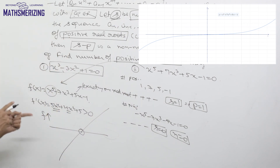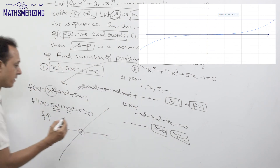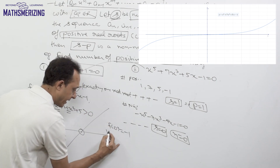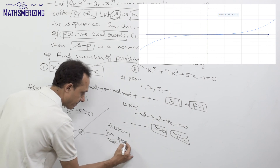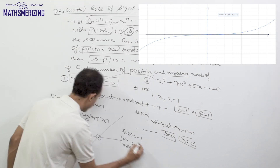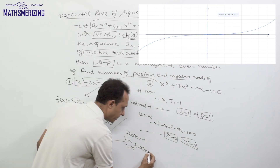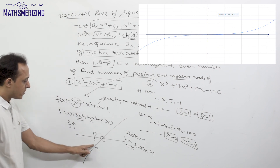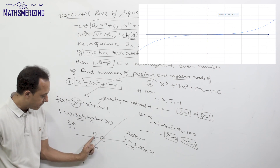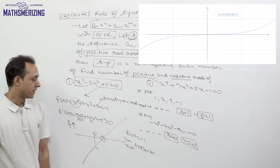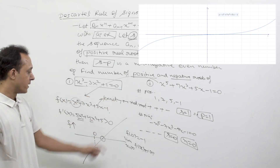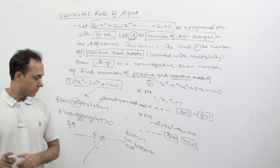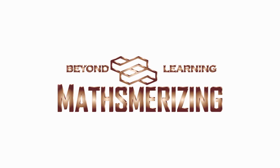We can use Bolzano's theorem to confirm the root is positive. f(0) = -1, and as x tends to infinity, f(x) tends to infinity. So f(0)·f(∞) < 0, meaning the root lies between 0 and infinity, making it a positive real root. So this equation has exactly one real root, and that real root is a positive real root.